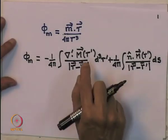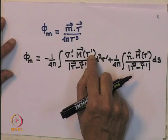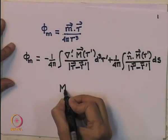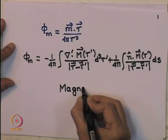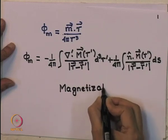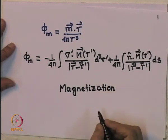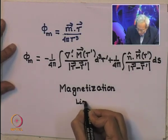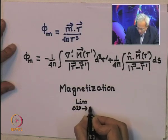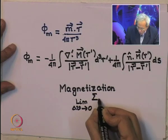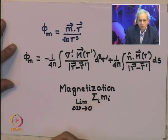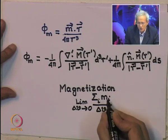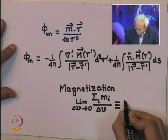Recall that we had defined polarization as the electric dipole moment per unit volume. What I do here is define a quantity called magnetization. Magnetization is basically the net magnetic moment per unit volume. So if I take a small volume delta-v going to zero and sum over all the magnetic moments in that volume and take this limit, this gives the net magnetic moment per unit volume — this is my definition of the magnetization vector M.